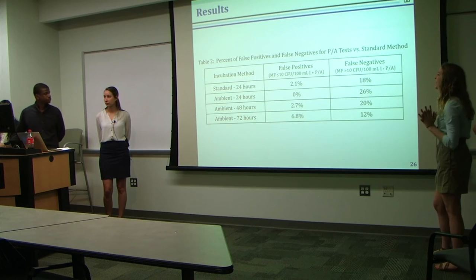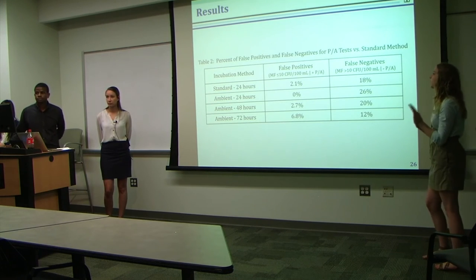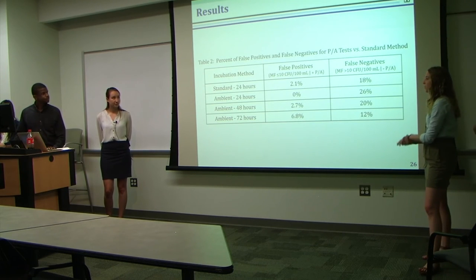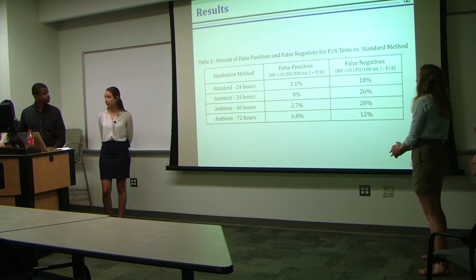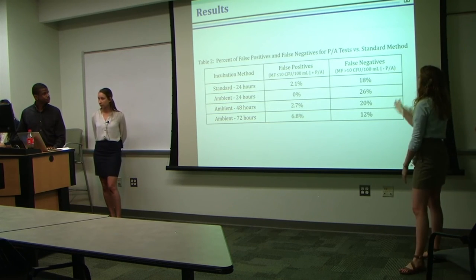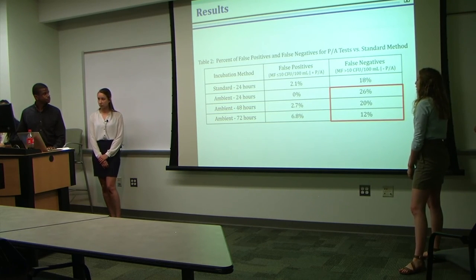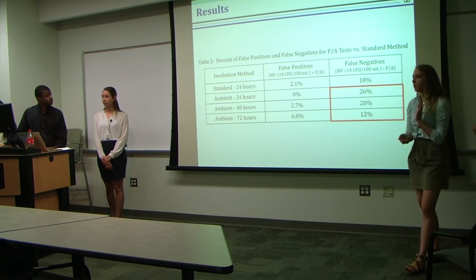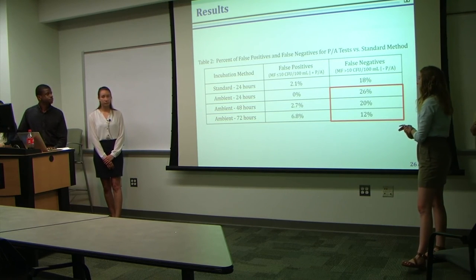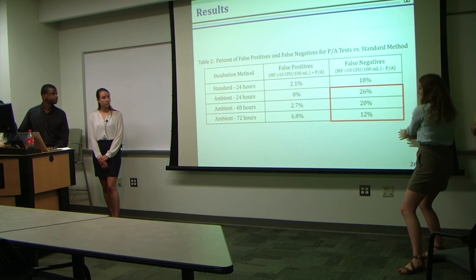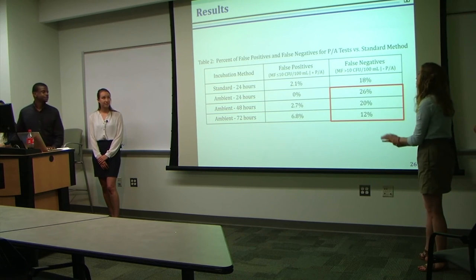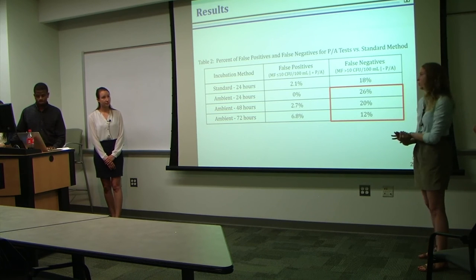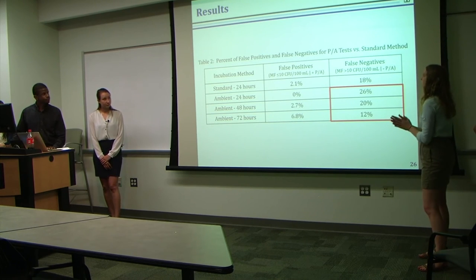There are a lot more false negatives than false positives, and ideally you would want more false positives than false negatives when talking about health risks. But what's interesting is that for the ambient incubation, after 72 hours it actually turned out to be more accurate than the standard incubation method, and it increasingly decreased in false negatives throughout the time period—which could mean that after more time, the presence-absence test can become even more accurate.